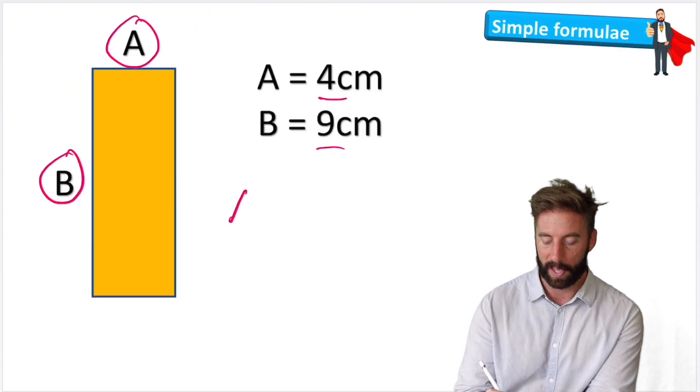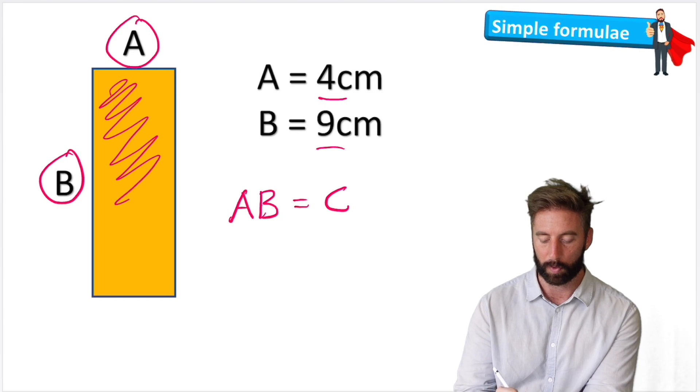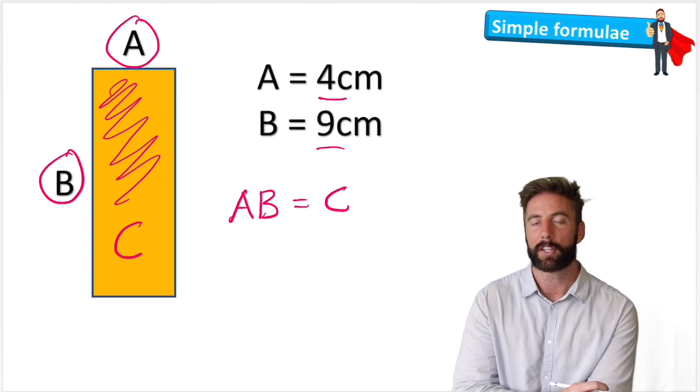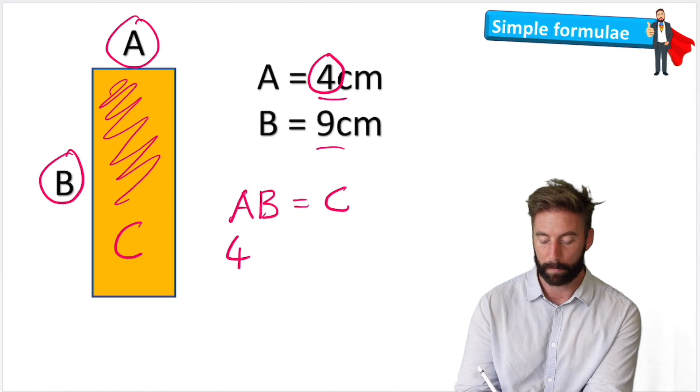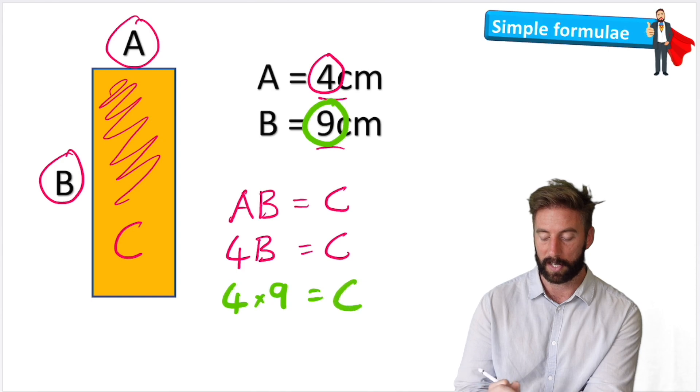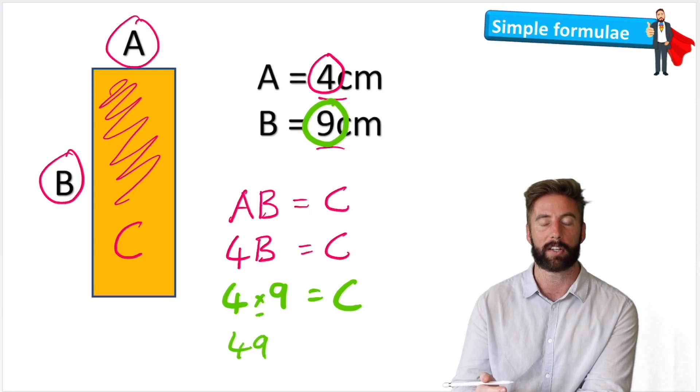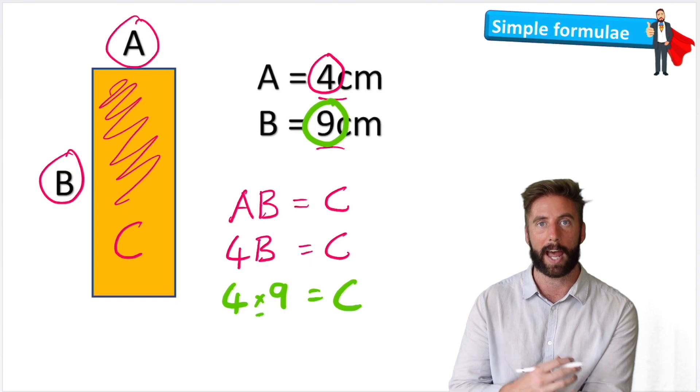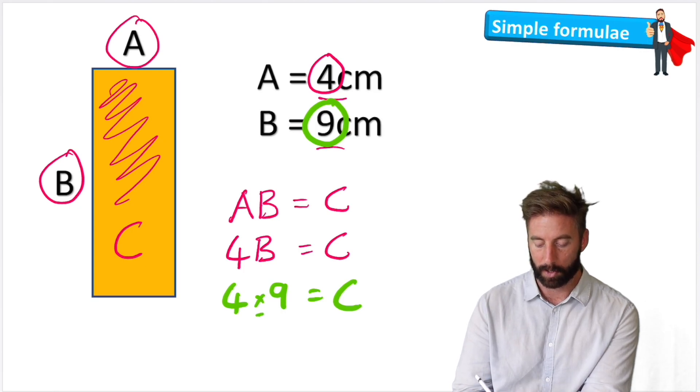So now I can write down my formula. We think AB will equal C. This shaded area will call C. And now all I'm going to do is substitute in my numbers to get my answer. So A could be substituted with 4, so I could write 4B equals C. And then I could substitute B with 9 and end up with 4 times 9 equals C. And you can see I've had to put my multiplication sign back otherwise I would have ended up with 49 and that could be misinterpreted. And now I can solve my algebraic equation by doing 4 times 9 and 4 times 9 is 36. So my answer would be 36 equals C or C equals 36.